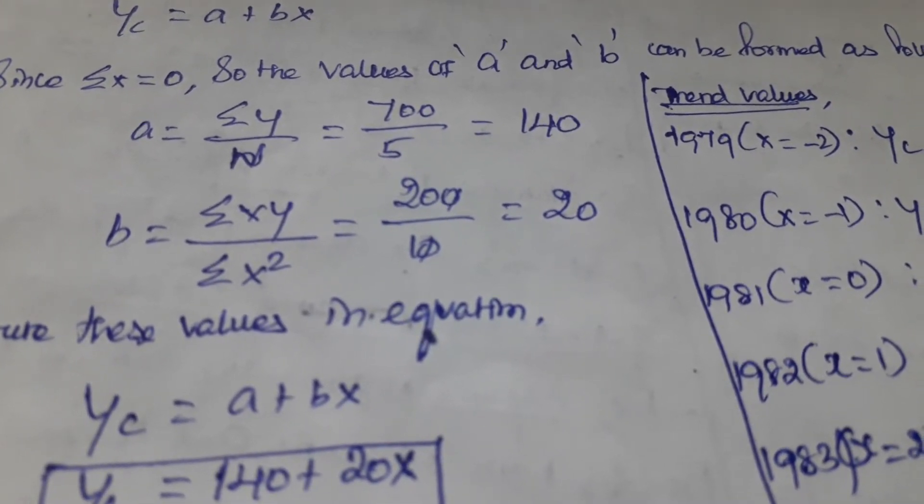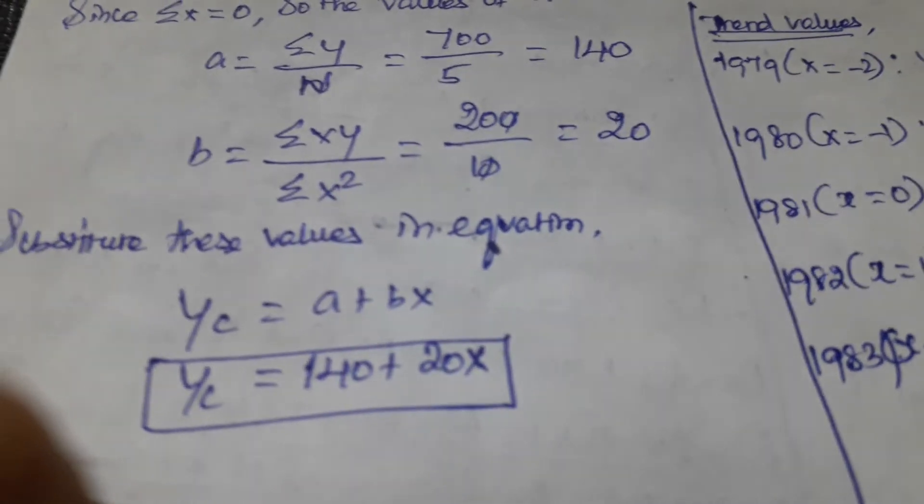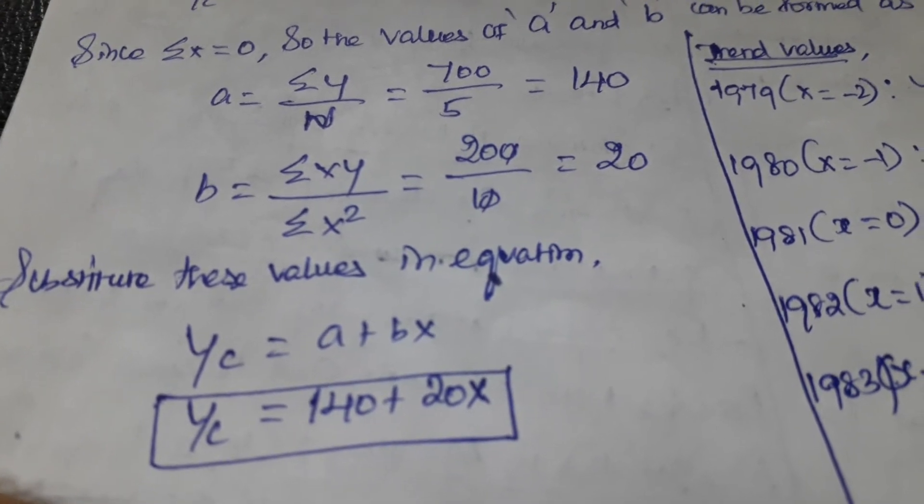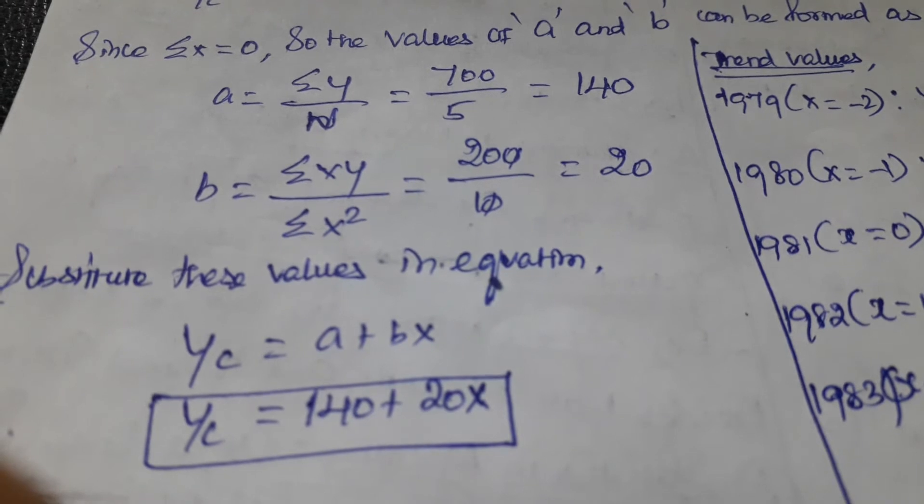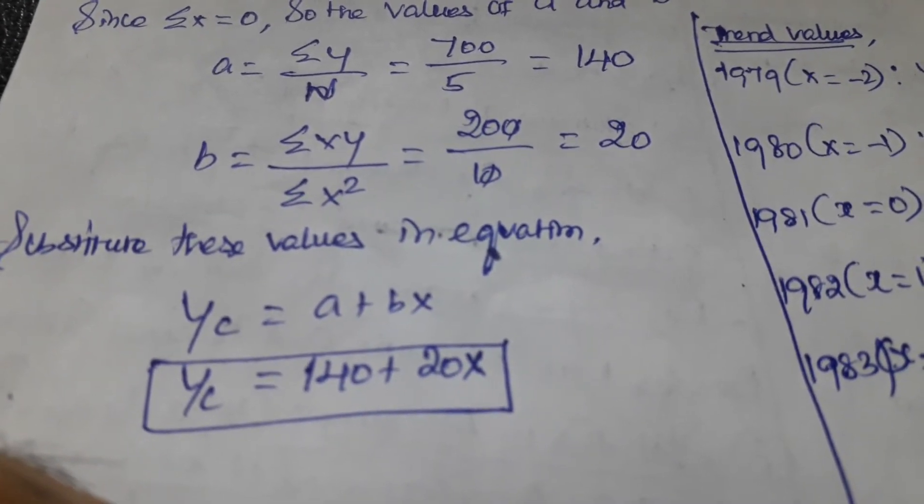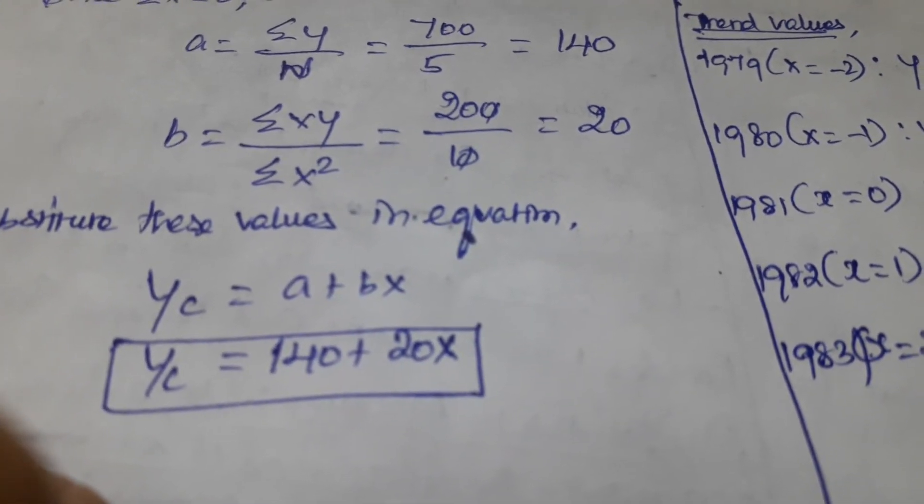That is 200 / 10, the answer is 20. Now we substitute these values in the equation. Yc = a + bX becomes Yc = 140 + 20X. Through this equation we find the trend values.